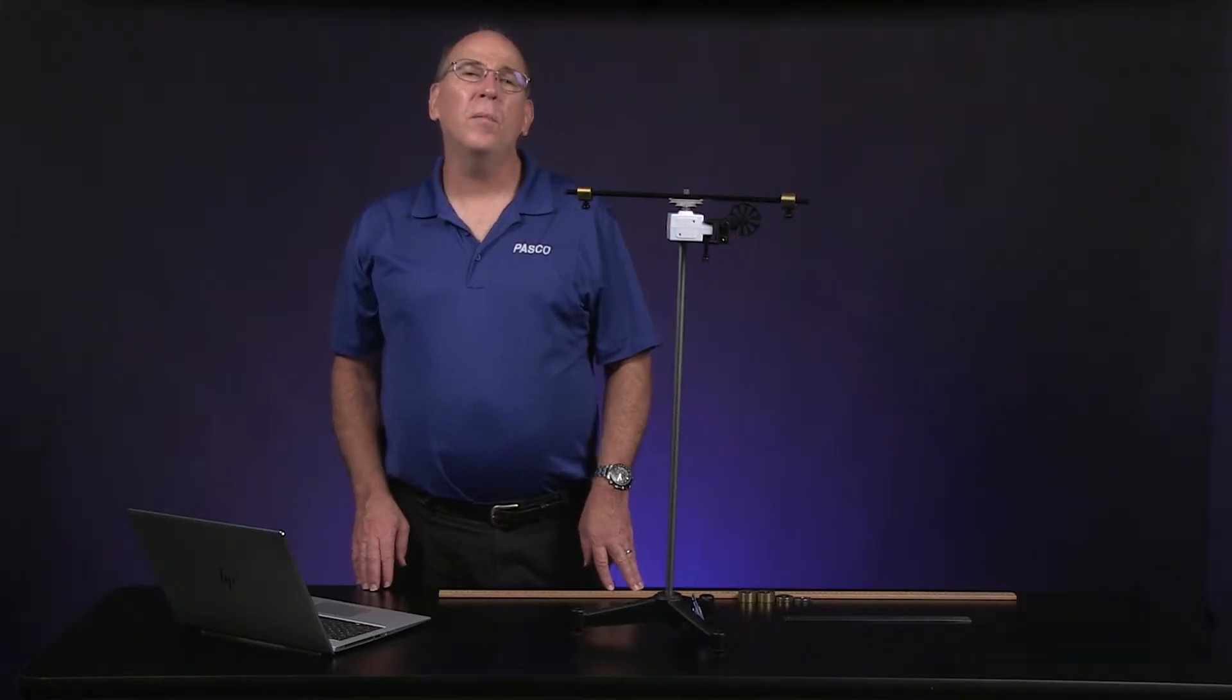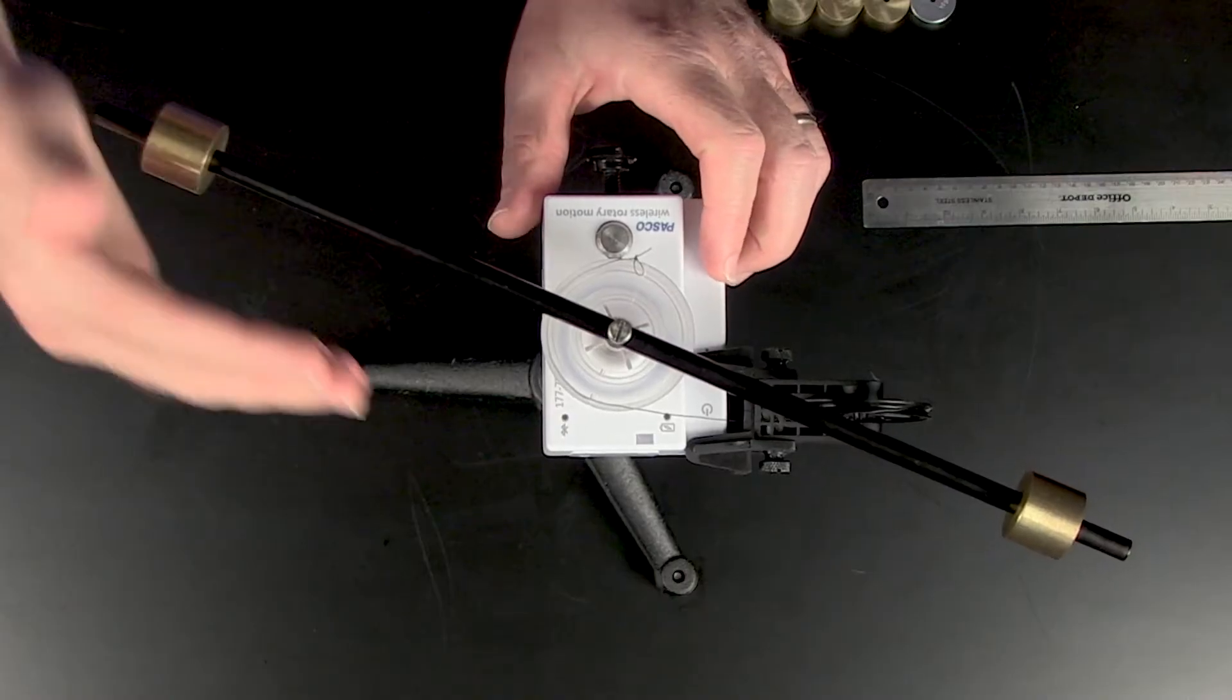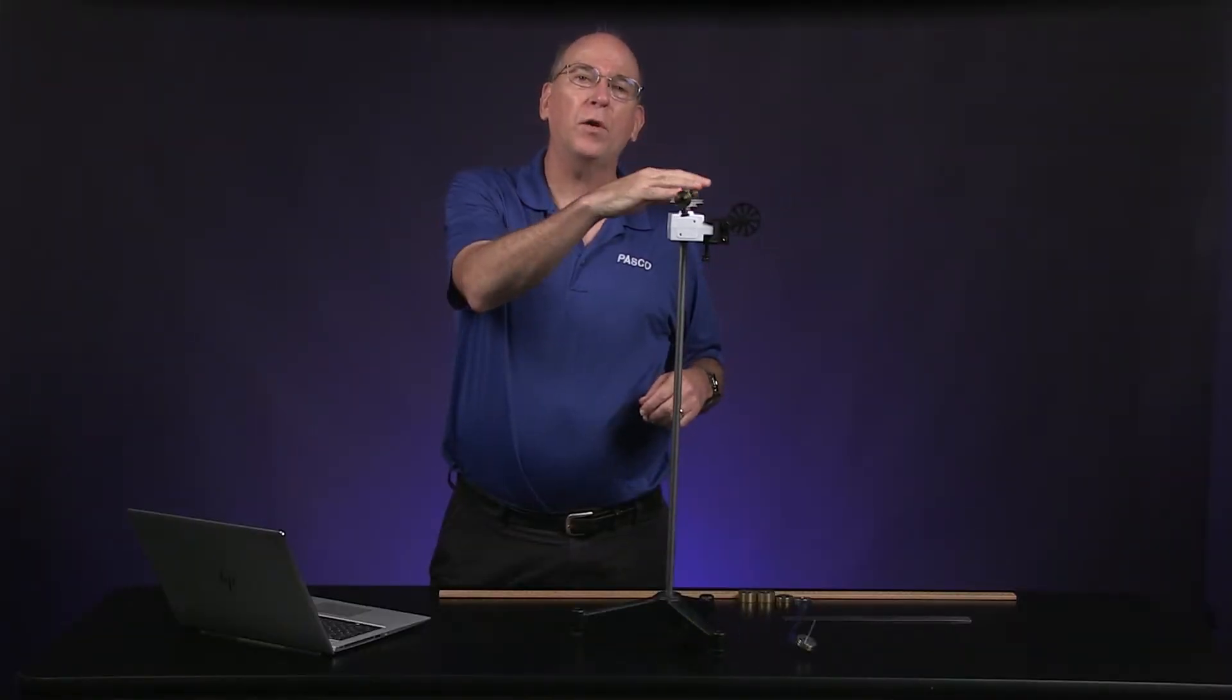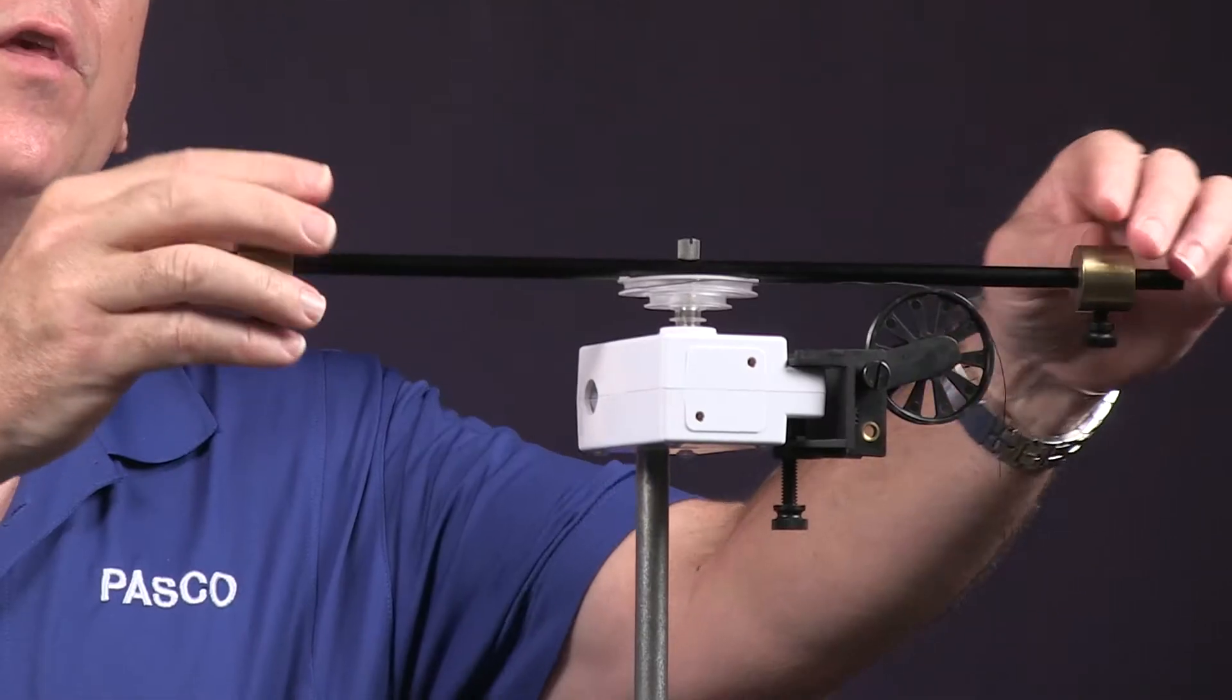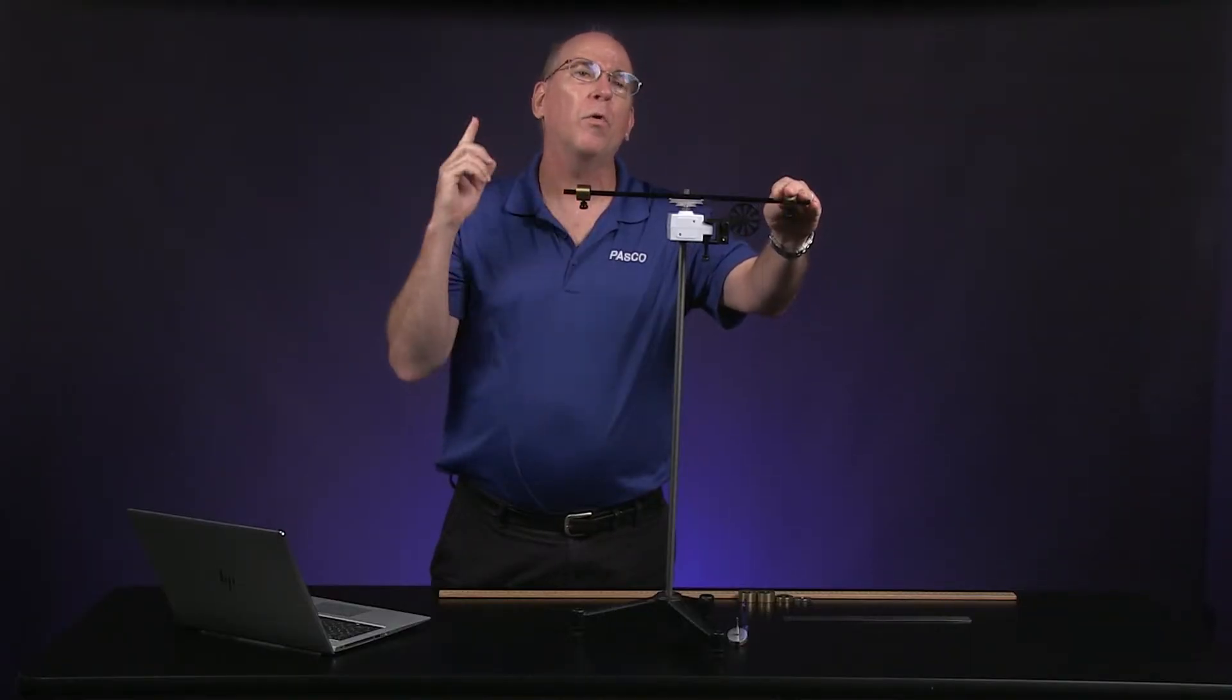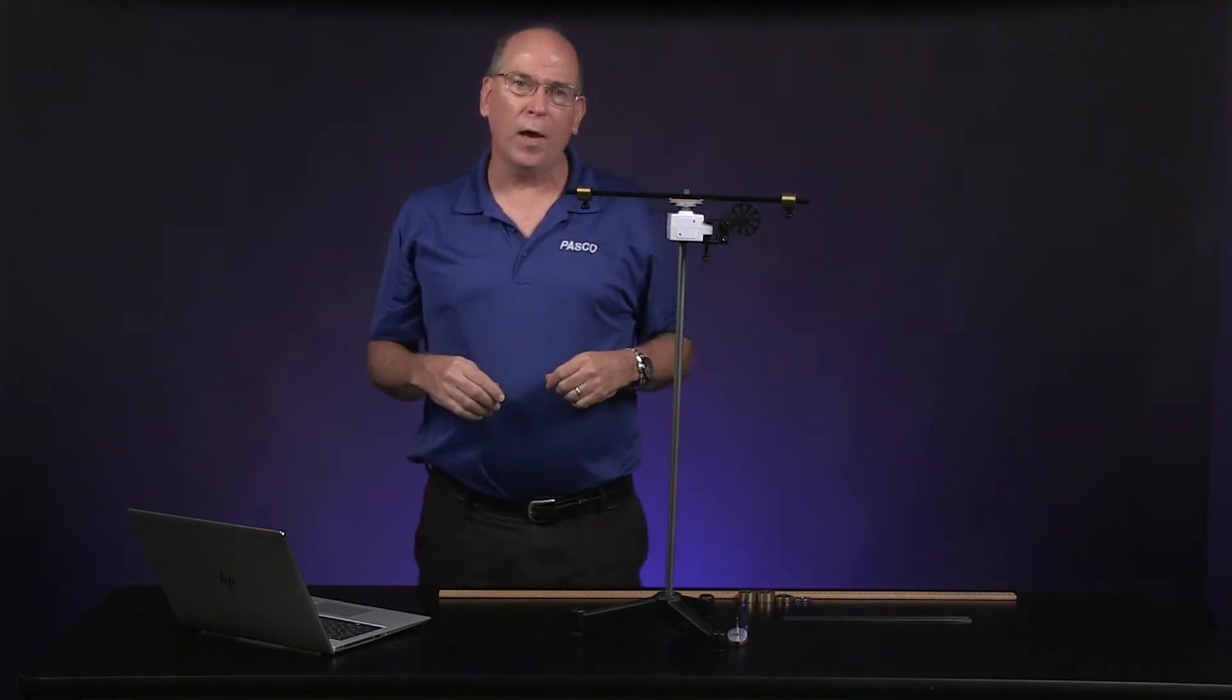Our system consists of this rotating arm attached to a rotary motion sensor. The sensor measures the angular velocity of the arm. We attach these masses to the arm to slow it down by increasing its rotational inertia. The farther out they are, the harder it is to rotate.